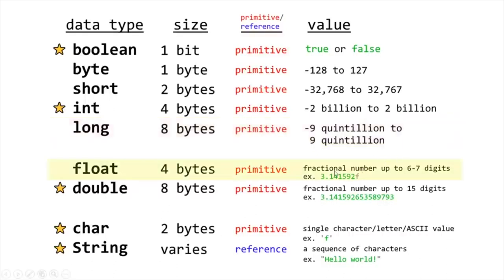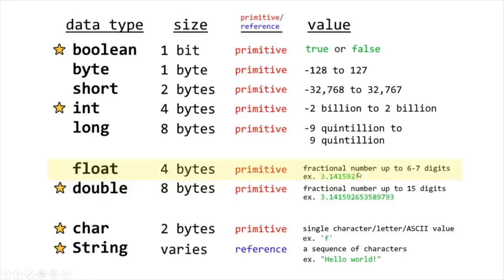A float can store a fractional number, specifically up to six to seven digits. What makes floats different is that bytes, shorts, integers, and longs can only store a whole integer — they cannot store a decimal portion. If you're working with a fractional number, you'll need a float or a double. A double has more precision — it uses eight bytes of memory and can store a fractional number up to 15 digits. There is one convention with floats: if you assign a value to a float variable, you need to follow the value with the letter f. With doubles, you do not need to do so.